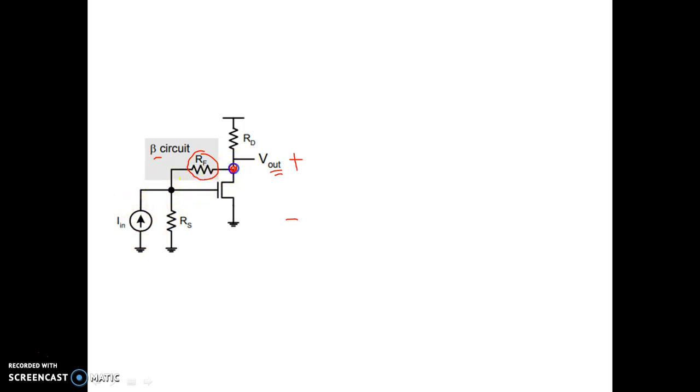This is the starting point of the feedback network, and this node is the starting point of the output voltage positive terminal. So the output voltage positive terminal and the starting point of the feedback network from the output side are basically the same node.